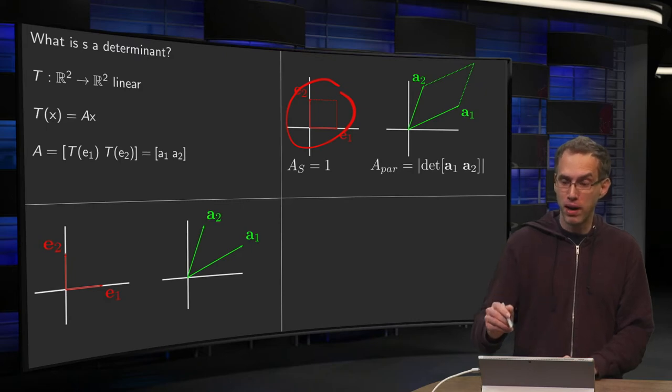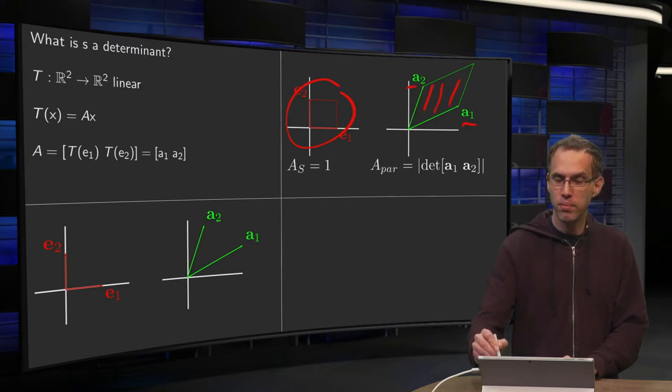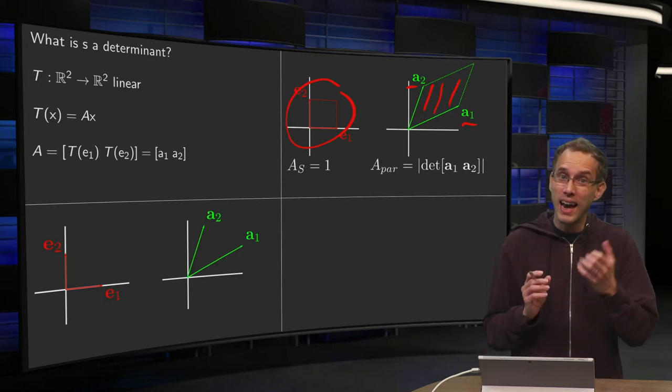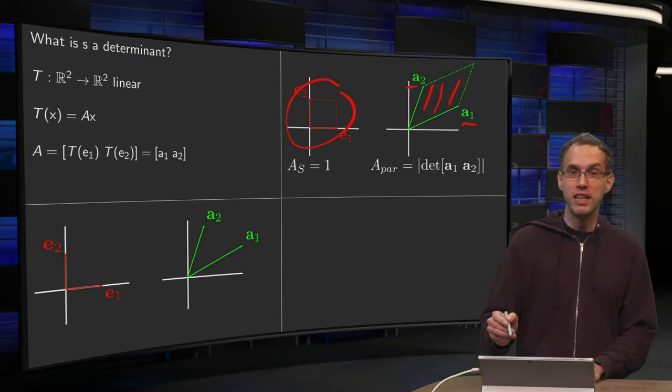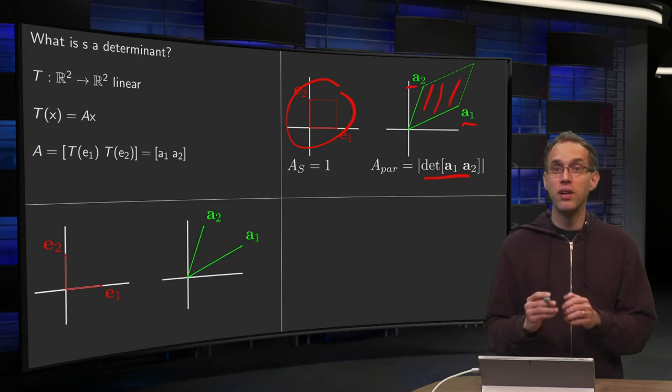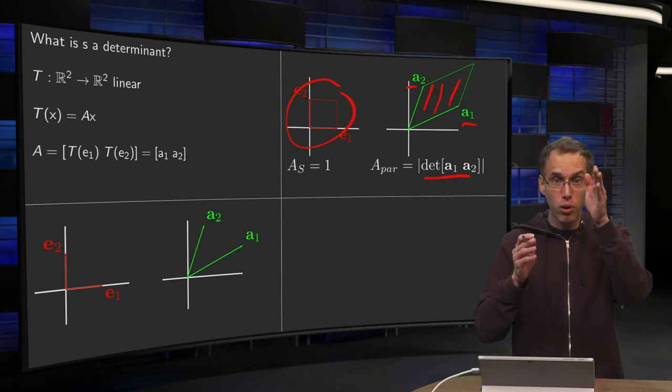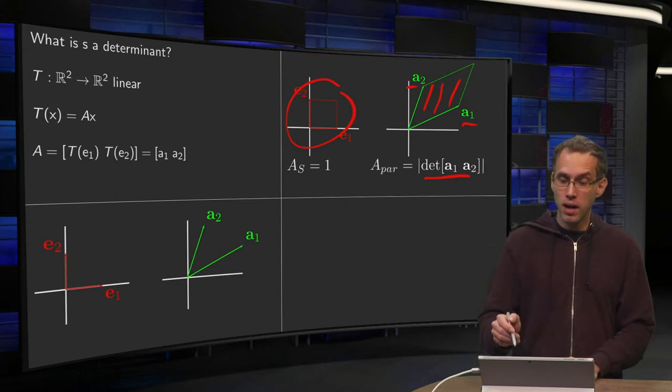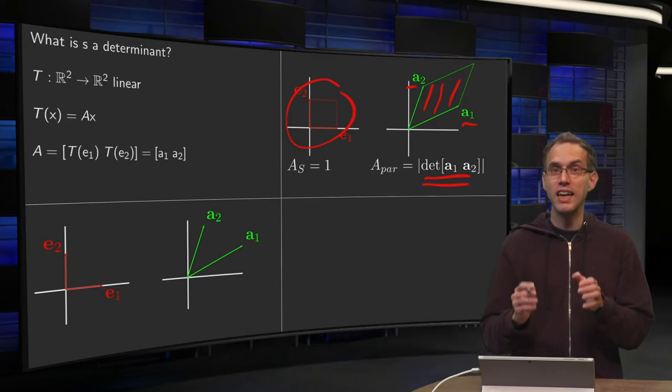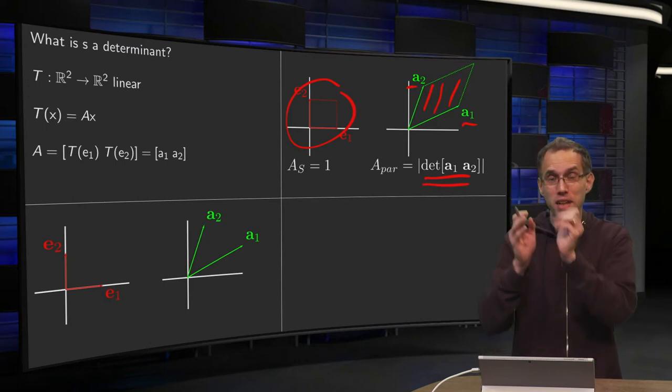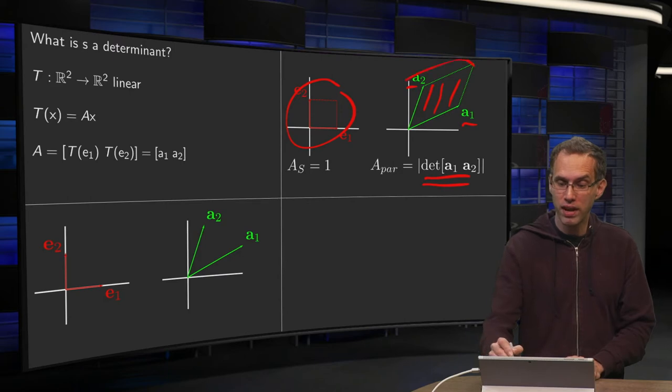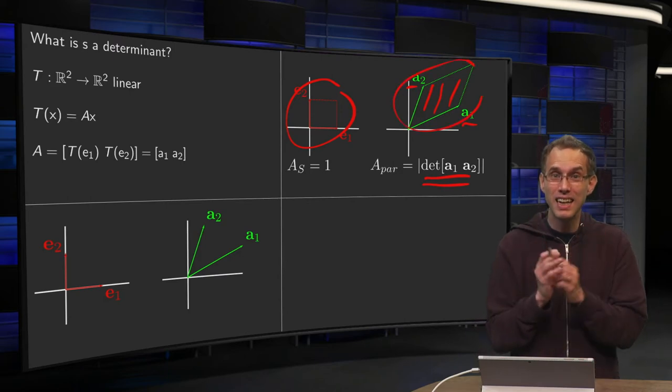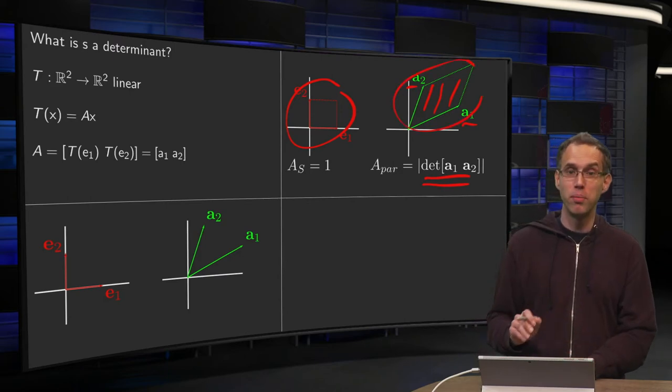And we can form the parallelogram formed by A1 and A2. And we get this parallelogram over here. Now, the area of that parallelogram is given by the determinant of the matrix, which has columns A1 and A2. Right, but that's exactly our matrix A. So, the area of our image parallelogram is exactly the modulus of the determinant of A.